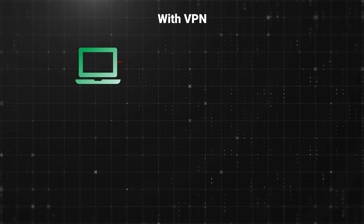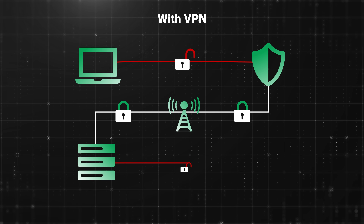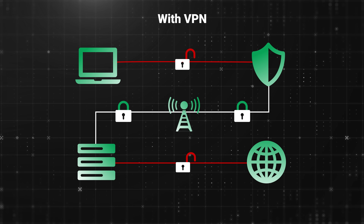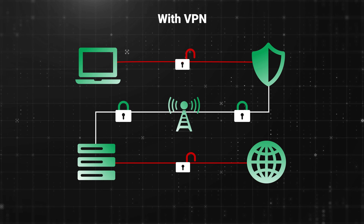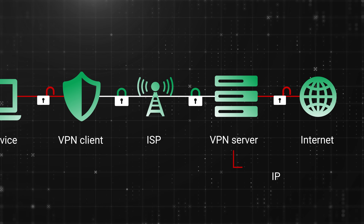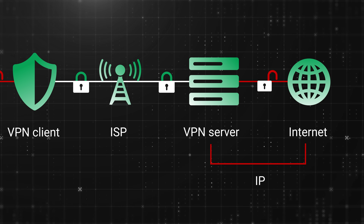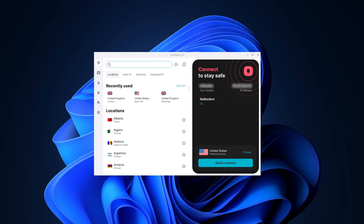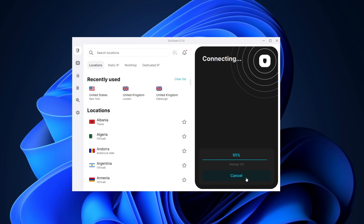With a VPN, your traffic gets encrypted, basically turned into a mishmash of symbols. This creates a secured connection, and then travels through a VPN server to your final destination. In this case, the website sees the IP address of the VPN server and not your actual IP, so you gain a certain level of anonymity. All the heavy lifting happens behind the screen, while on your end, a VPN is just a simple app.